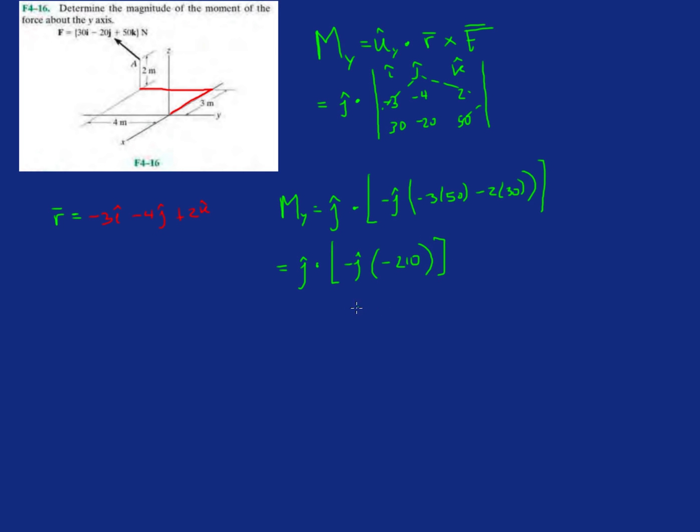Okay, and then negative, negative, positive, so we have 210. Oh yeah, and then j dot j is just equal to 1, and then we're just back to a scalar. Okay, so that's how much moment is being transferred about the y-axis.